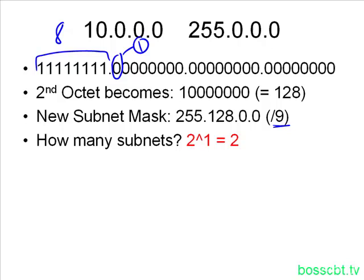So here we took one bit from the host portion. So that goes into our formula, two to the power of one equals two, we're creating two subnets. So when we apply this subnet mask to our Class A network, we create two subnets. Great.